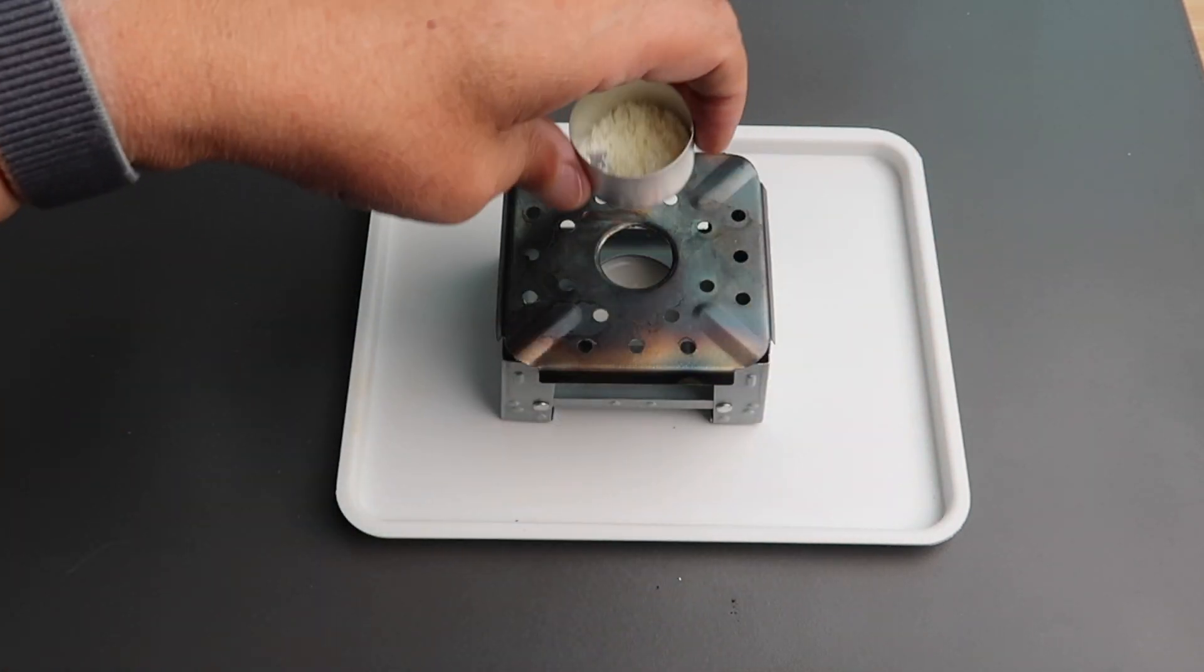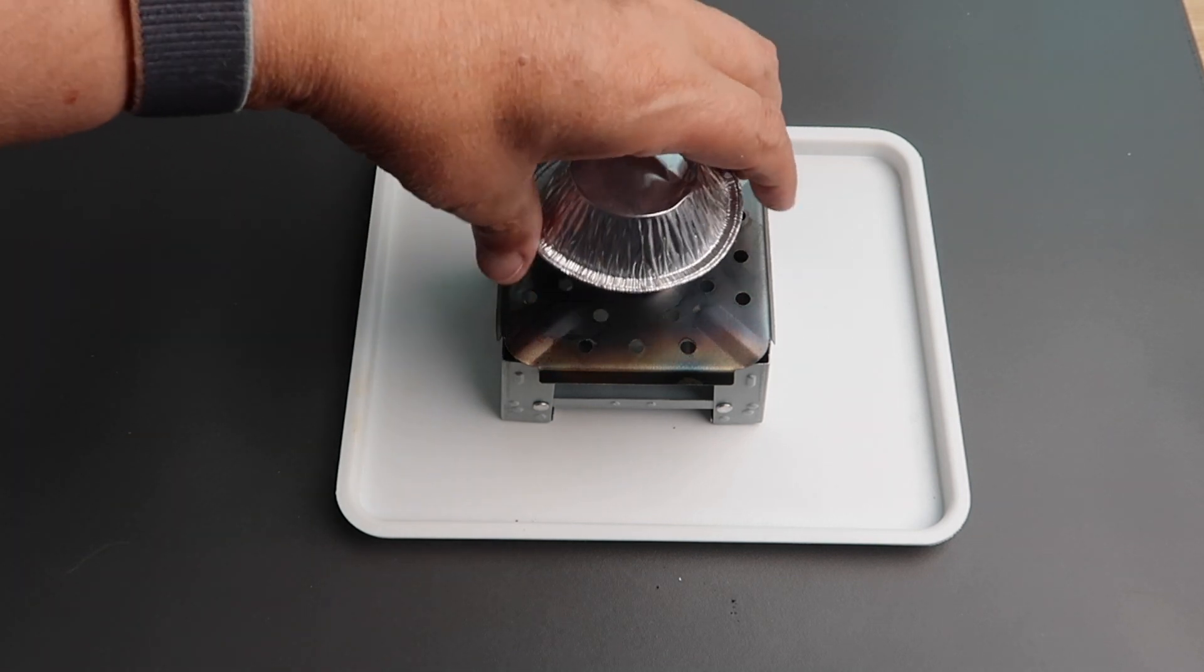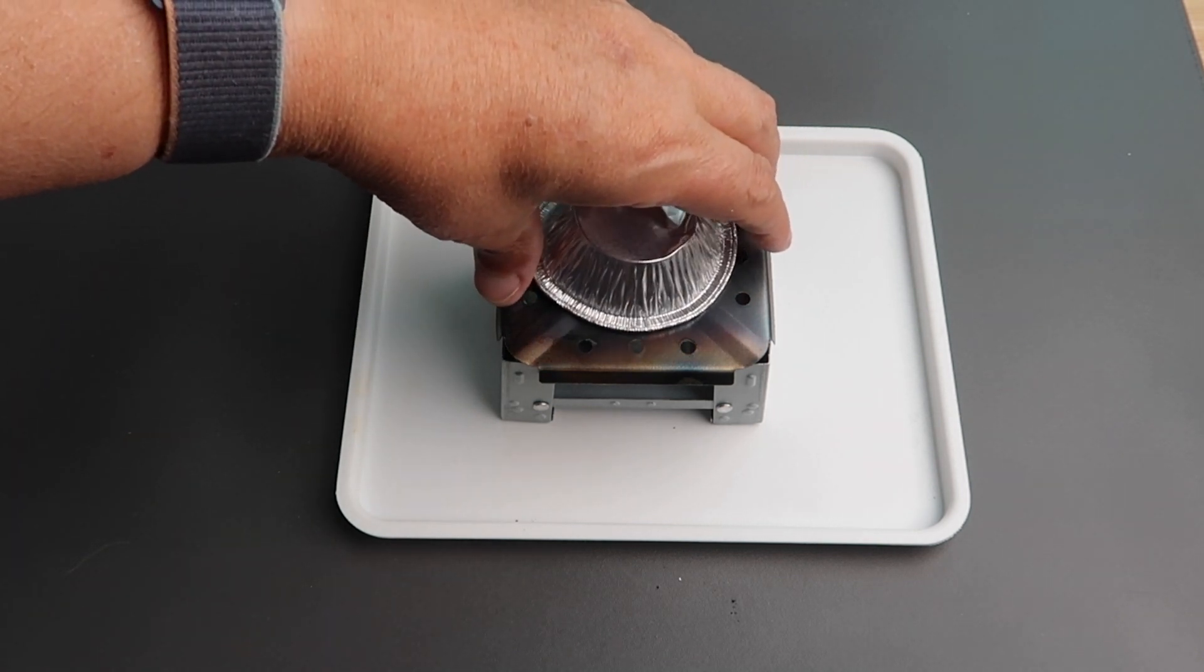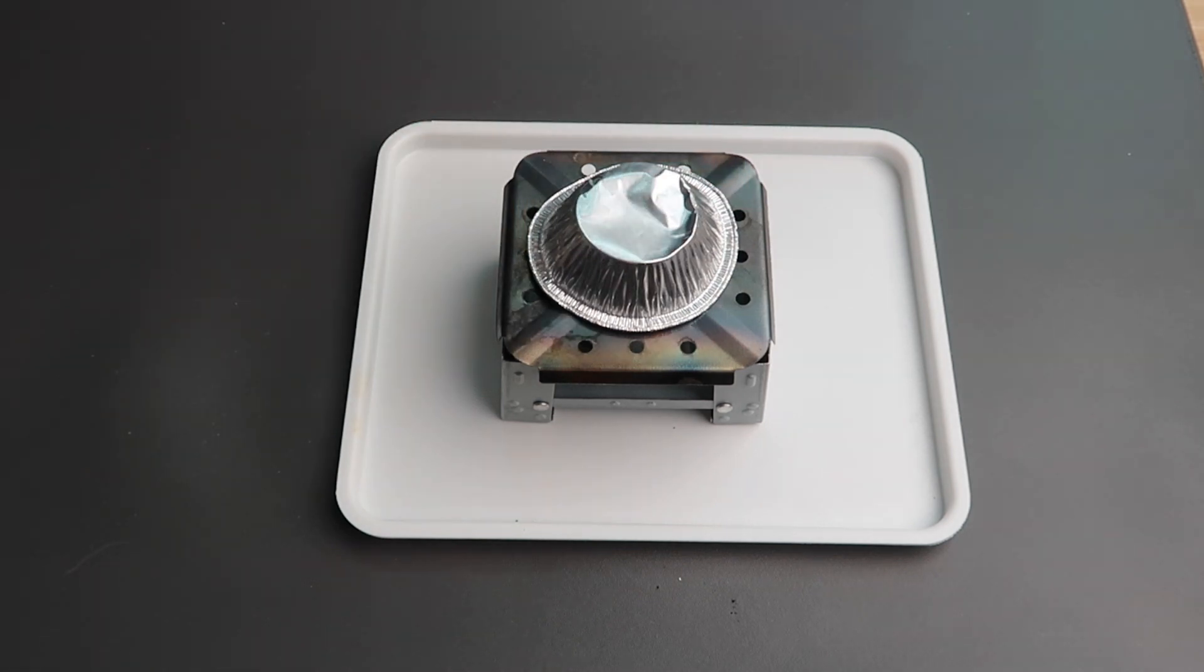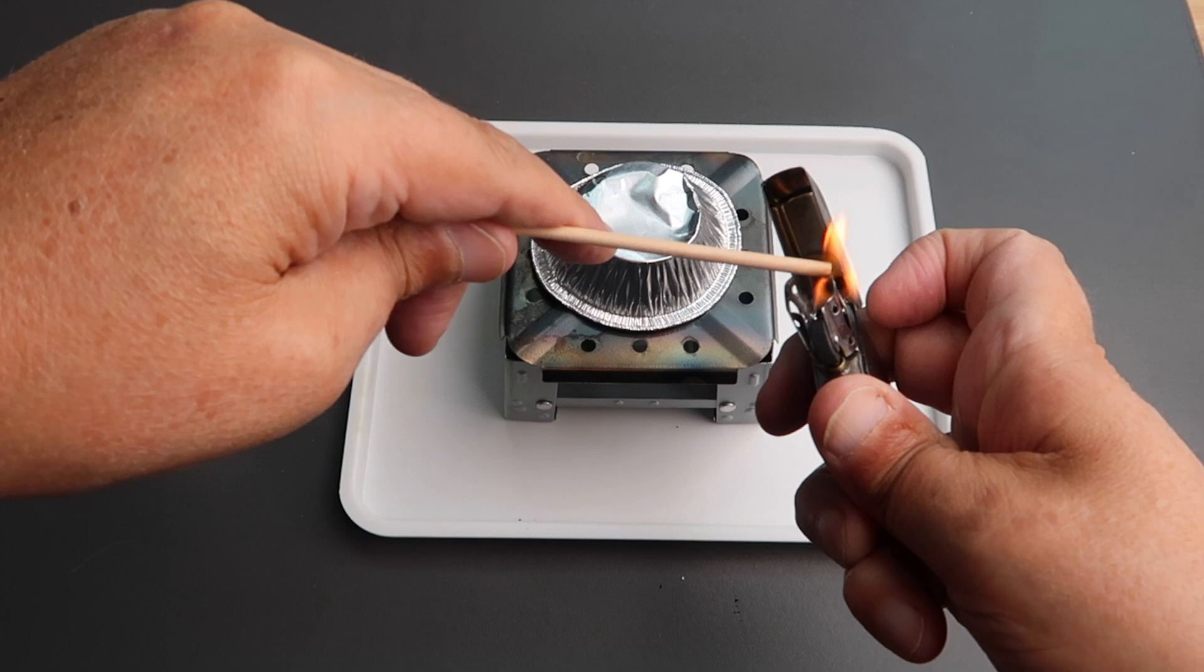Set the container of fuel on top of the burner stand. Put the tea candle inside and light it and cover the fuel with a foil cup. This is to remove the moisture from the mixture.